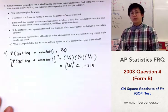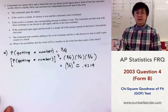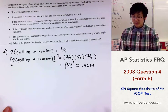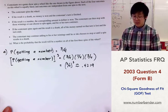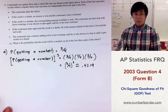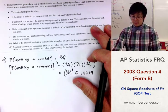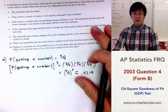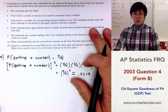The probability of getting a number or winning something when spinning the wheel three consecutive times is 0.4219.